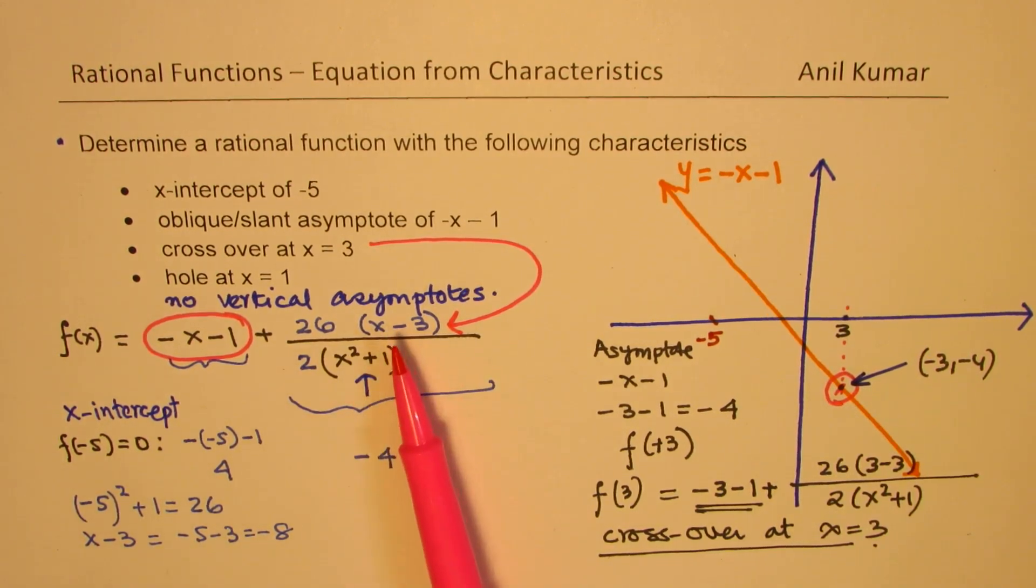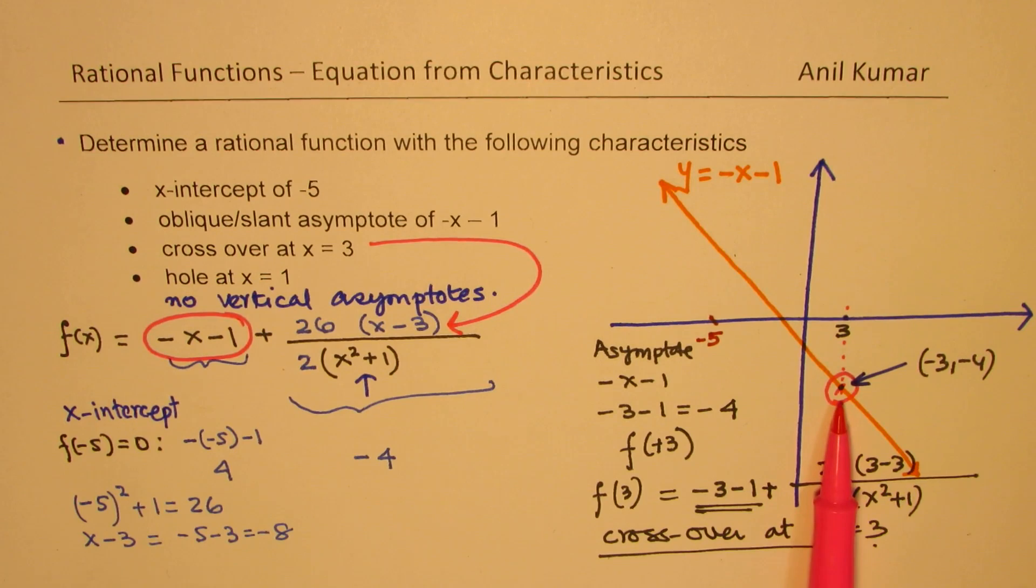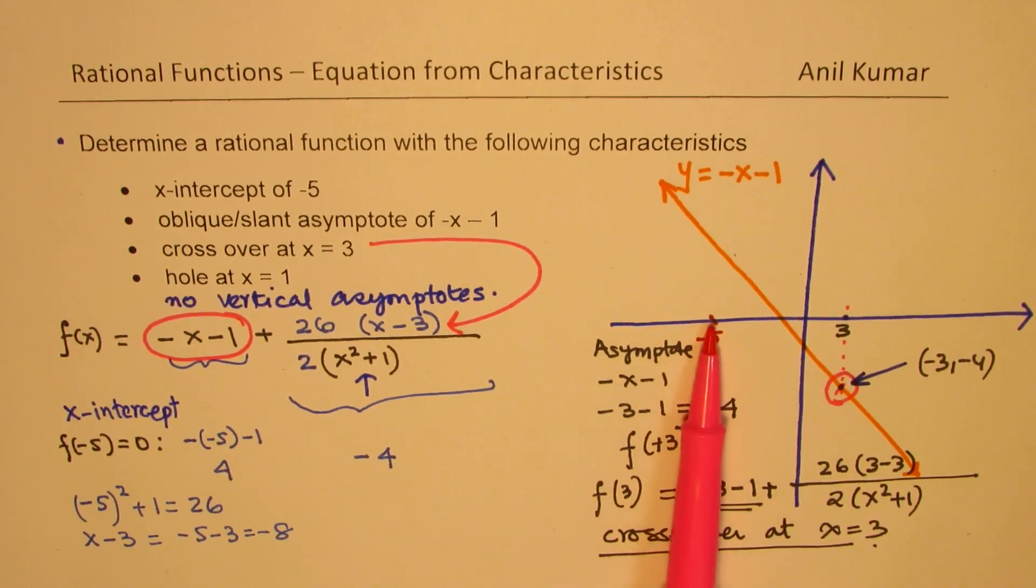So therefore, this is a very important factor to be taken in the numerator, as that governs the crossover point. Perfect.